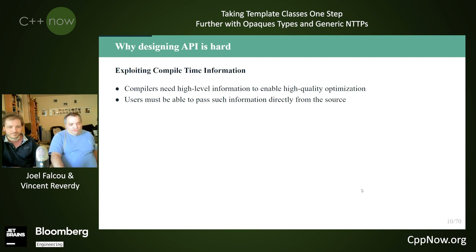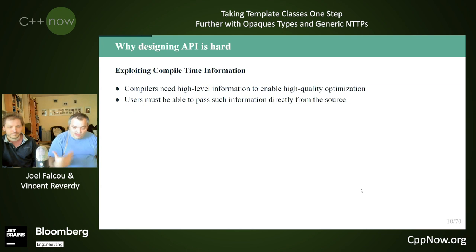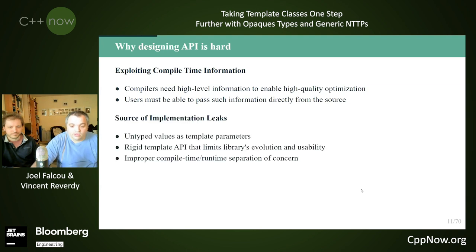What we want to be able to do is exploit the maximum amount of information the user puts into the code. This information can be retrieved in two ways: either we can know about it at compile time and exploit it at that point, or we find a way to retrieve it at runtime. But the more we do at compile time the better, which means users themselves should be able to pass this high-level information to the compiler.